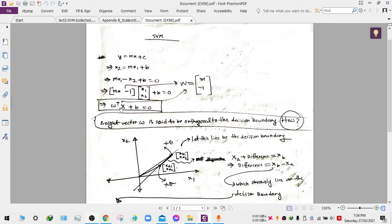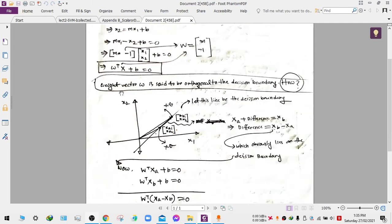A matrix has dimension more than one, and a column matrix is called a vector. This part can be written as the transpose of this weight vector, and this part we write as capital X. So the weight vector w is said to be orthogonal to the decision boundary.